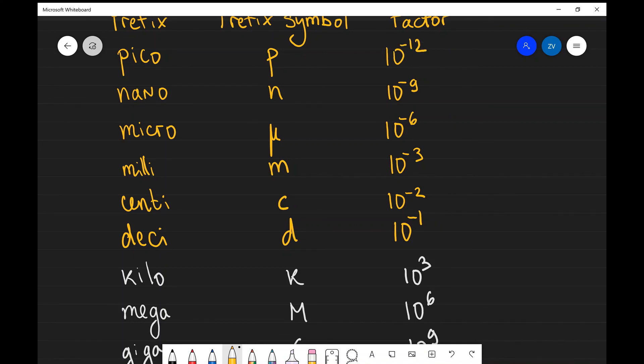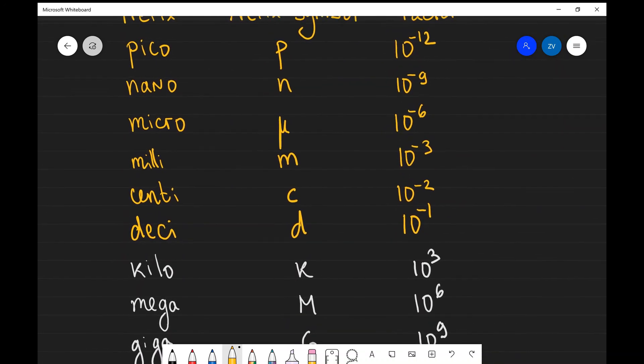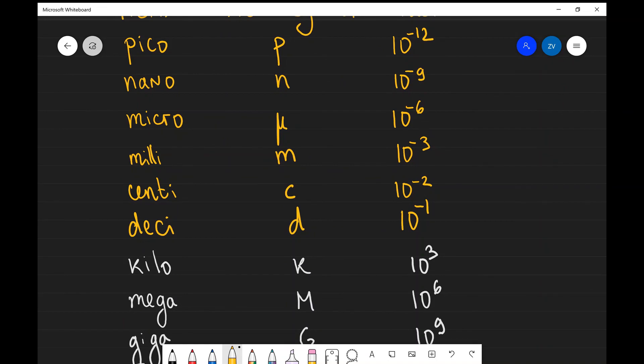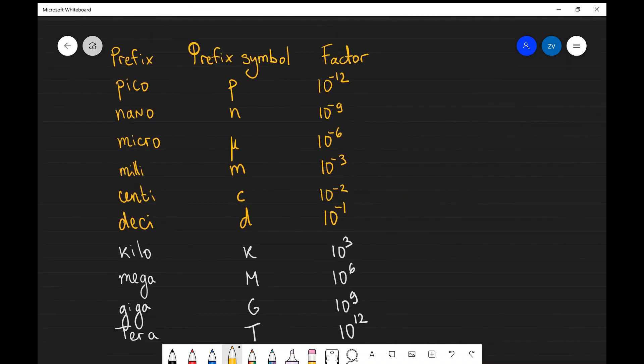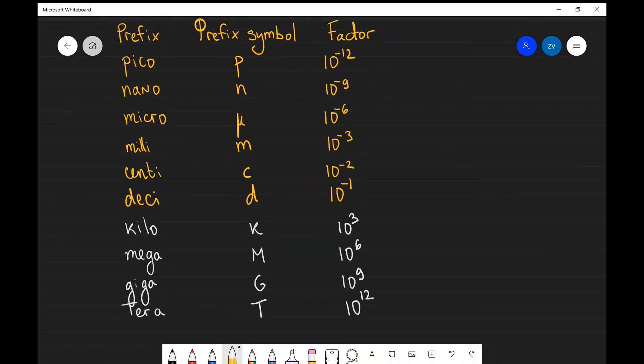Now those prefixes need to be known for the exam. There are a few different learning methods. Some students prefer to memorize them right from the start. There are different ways that you can do that. However, we're going to be doing so many problems throughout the physics course that naturally we're going to get used to using these prefixes all the time. What we're going to be looking at next is problems in which we're going to be converting from one prefix to the base quantity or from one prefix to another. So stay tuned for that.